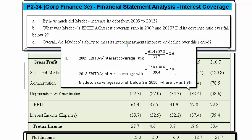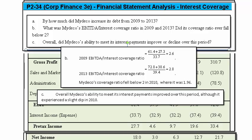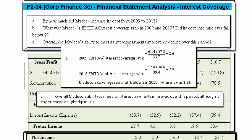Part C asks whether the coverage improved or declined over this period — and it improved slightly, from 2.6 to 2.8 in terms of EBITDA over interest coverage. However, it did fall in one year to below 2.0. That slight drop is really what this question is asking you to think about. I hope you found this helpful.